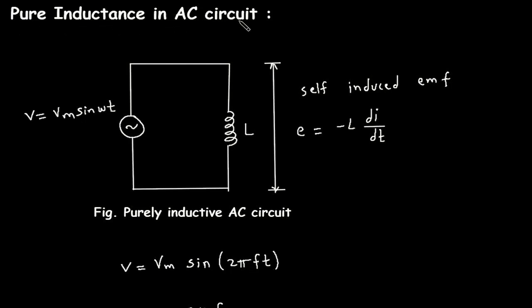Pure inductance in AC circuit. Here we can see this is a purely inductive AC circuit — this is the inductor and this is the AC source, where instantaneous voltage V is equal to Vm sin(ωt).